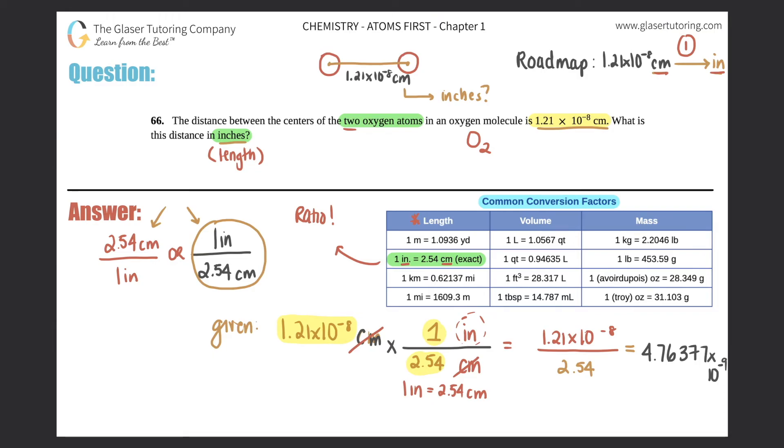And now we just have to give the correct sig figs. And remember when you're converting, the correct sig figs always come from the given sig figs, never the conversion factor sig figs. So it never comes from this chart. I don't care how many sig figs in any of these numbers are. It always comes from the given. And the given was 1.21 times 10 to the negative eighth. Now remember that the times 10 to the does not matter for sig figs. So we don't really care about that. All we care about is the 1.21.